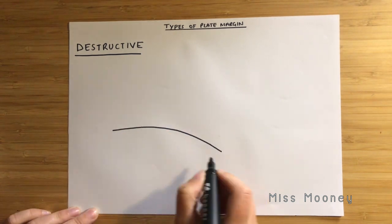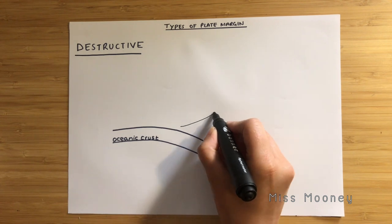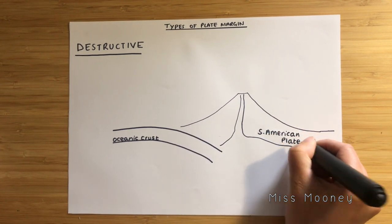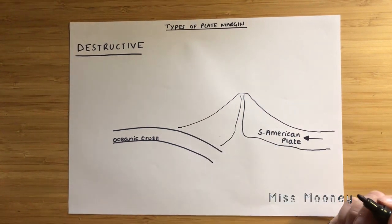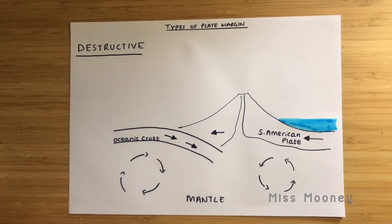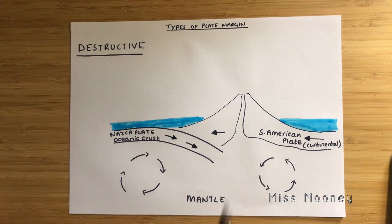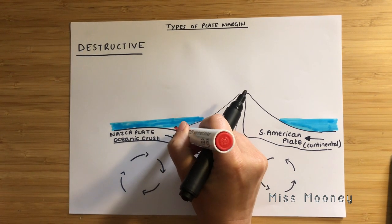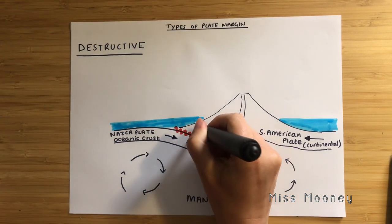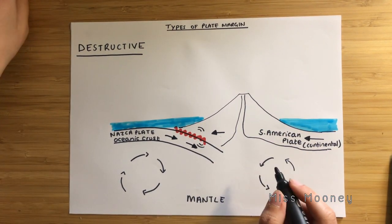We are now going to look at what happens when two plates move towards each other. Destructive plate margins are when two plates converge together, resulting in the destruction of Earth's crust. This usually involves an oceanic plate and a continental plate. As we saw previously, the oceanic crust is denser and the continental crust is less dense. Therefore, when they meet, the oceanic plate is pushed down — or subducted — under the continental plate at what is called a subduction zone. This normally causes a deep trench where those two plates meet.